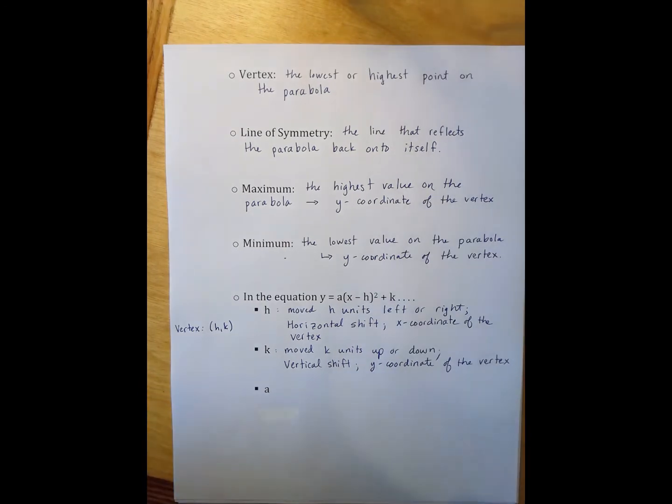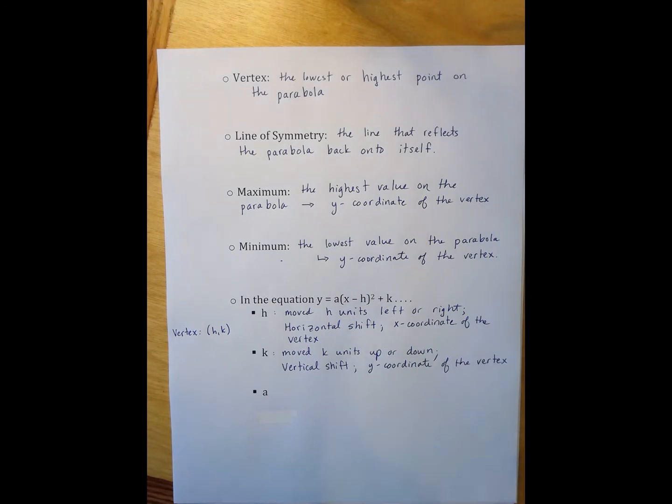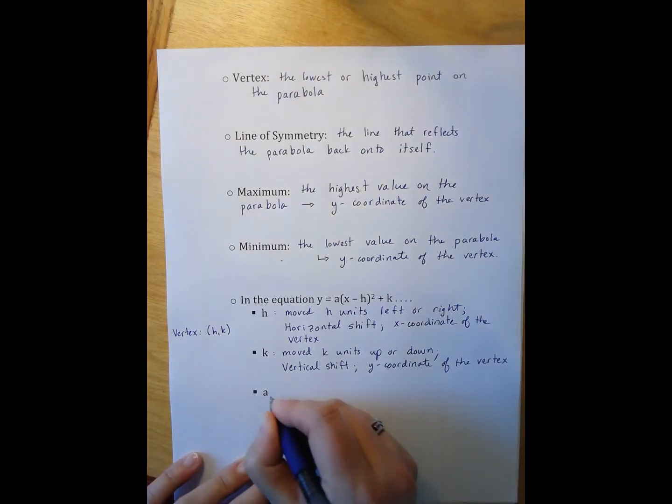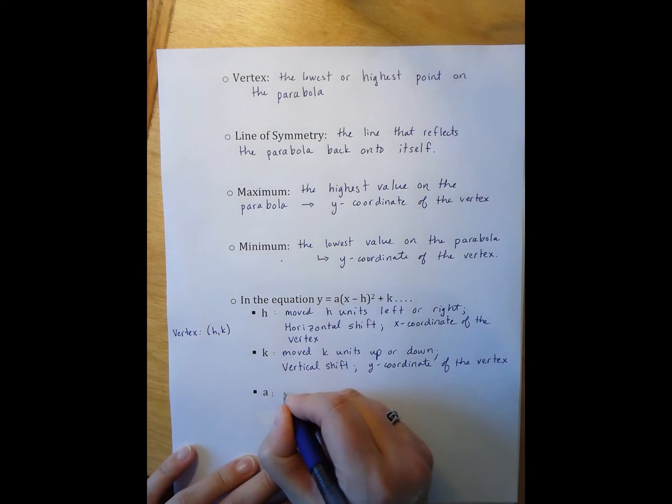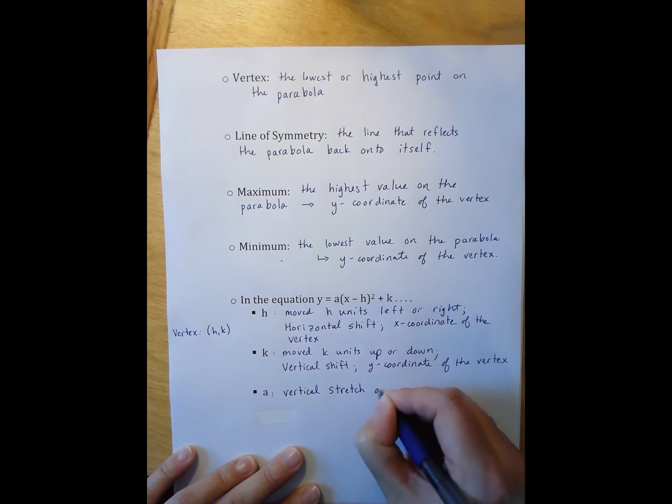So the a has, so I need to kind of go through a whole bunch of possibilities for the a. So when the a, so this is our vertical stretch and reflection. And now I need to talk about the various values a can be.